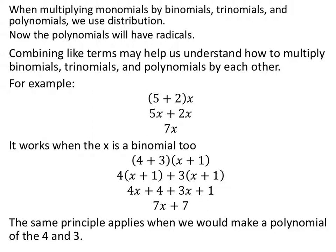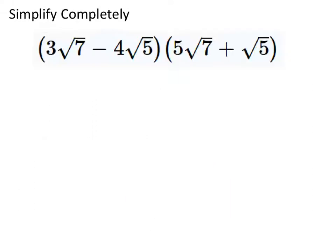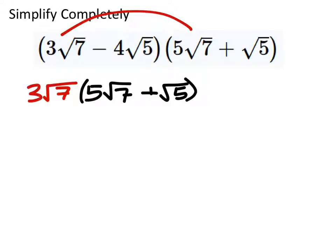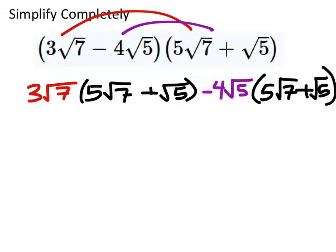When we're multiplying two binomials, we're going to use distribution, not FOIL — because when we start multiplying by larger binomials, FOIL has to go away anyway. So we multiply each term separately: 4 times (x + 1) and then 3 times (x + 1). From now on, these will involve square root terms. So on this example — distribution, same as usual — I'm going to take my 3 root 7 and multiply it by the parenthesis, and then multiply my negative 4 root 5 by the same parenthesis.